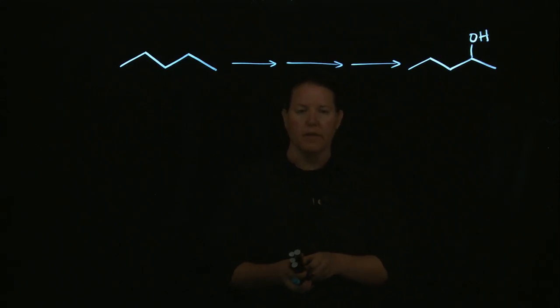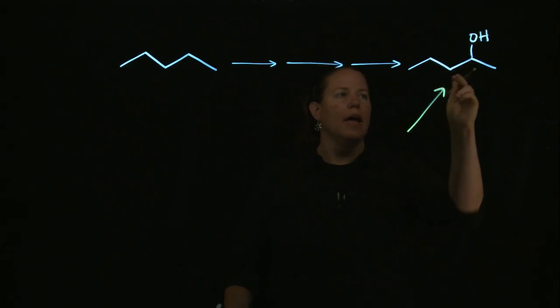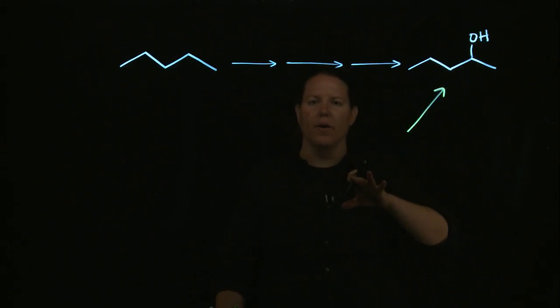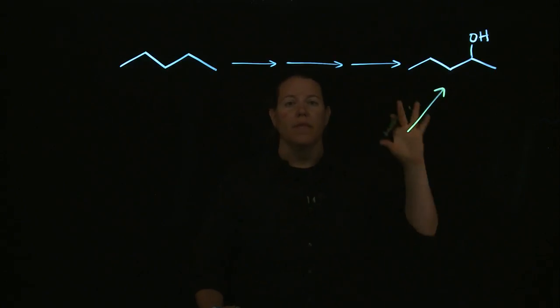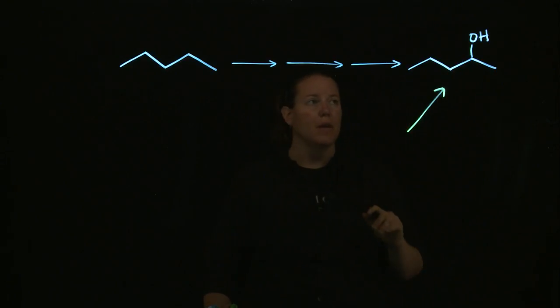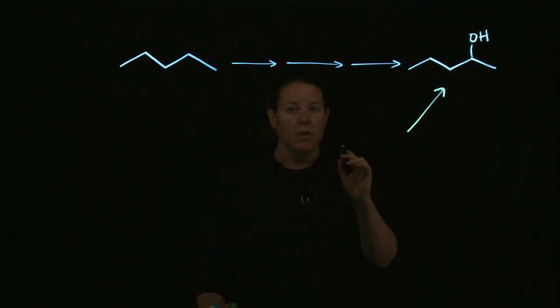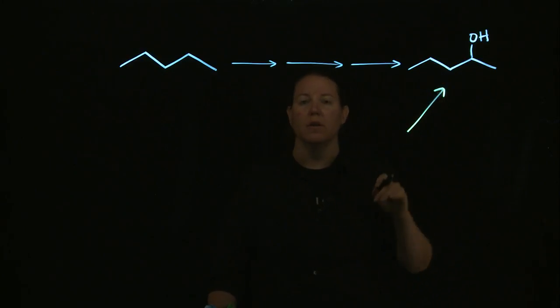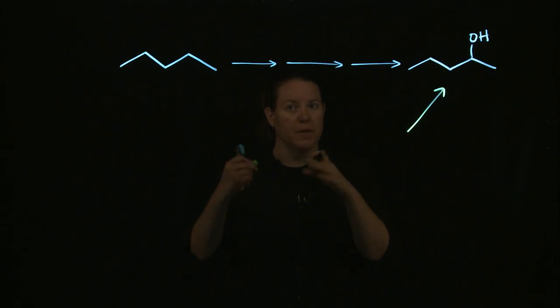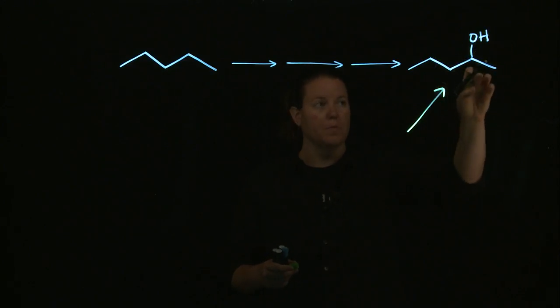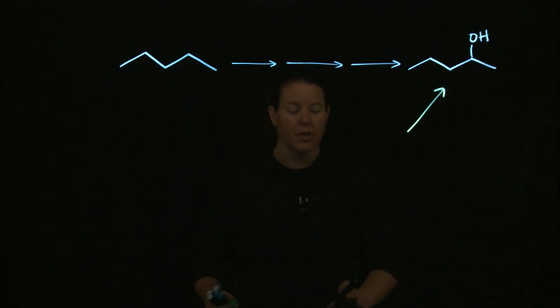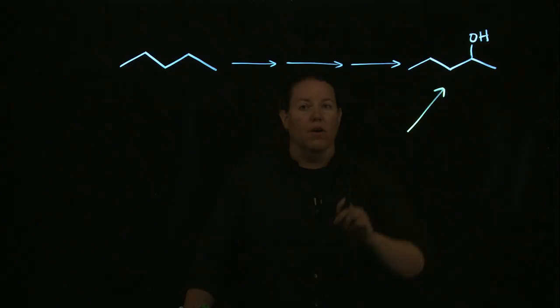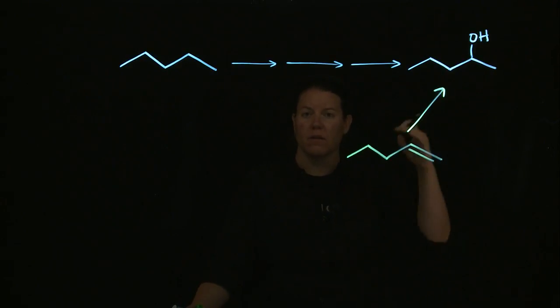Basically, what they're going to say is, what do I know right now in all of the reactions that I've learned that can make this? What you know is you know how to make an alcohol like this. This is particularly a secondary alcohol. Secondary comes from the fact that the carbon bonded to the OH group is bonded to two other carbons. I know how to make a secondary alcohol from pretty much only one thing, and that's a double bond. So an alkene is how I've learned how to make an alcohol.